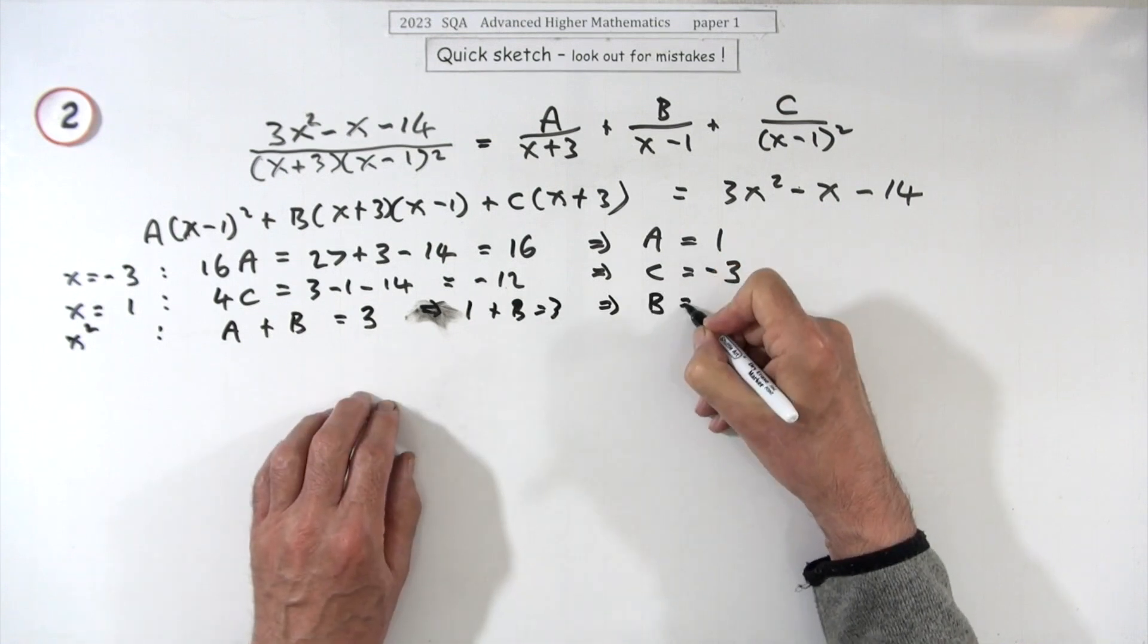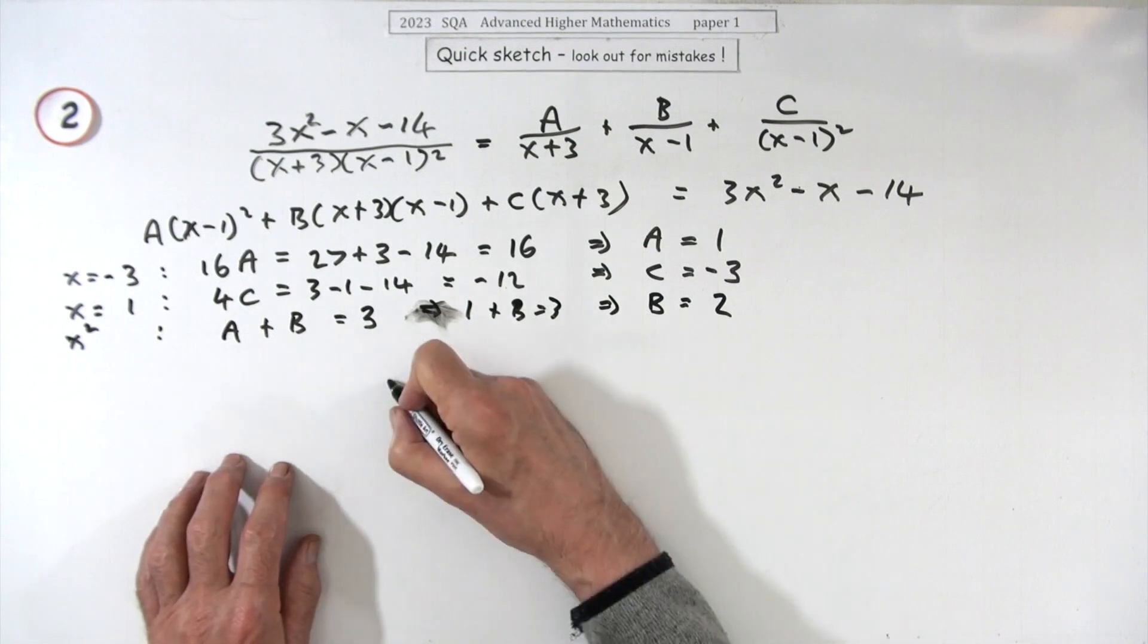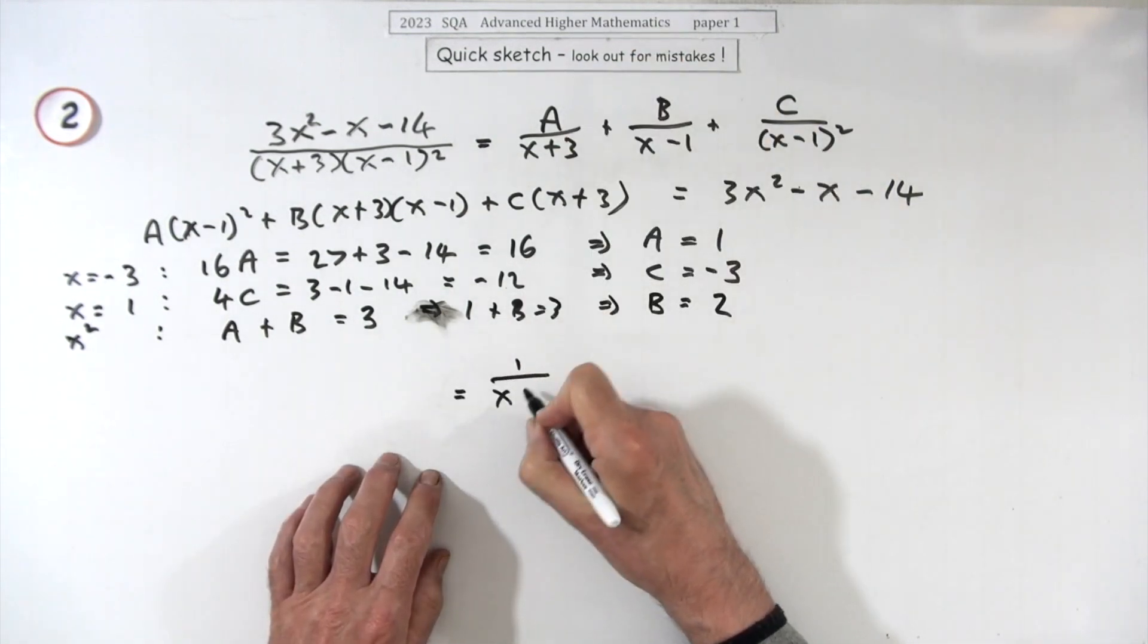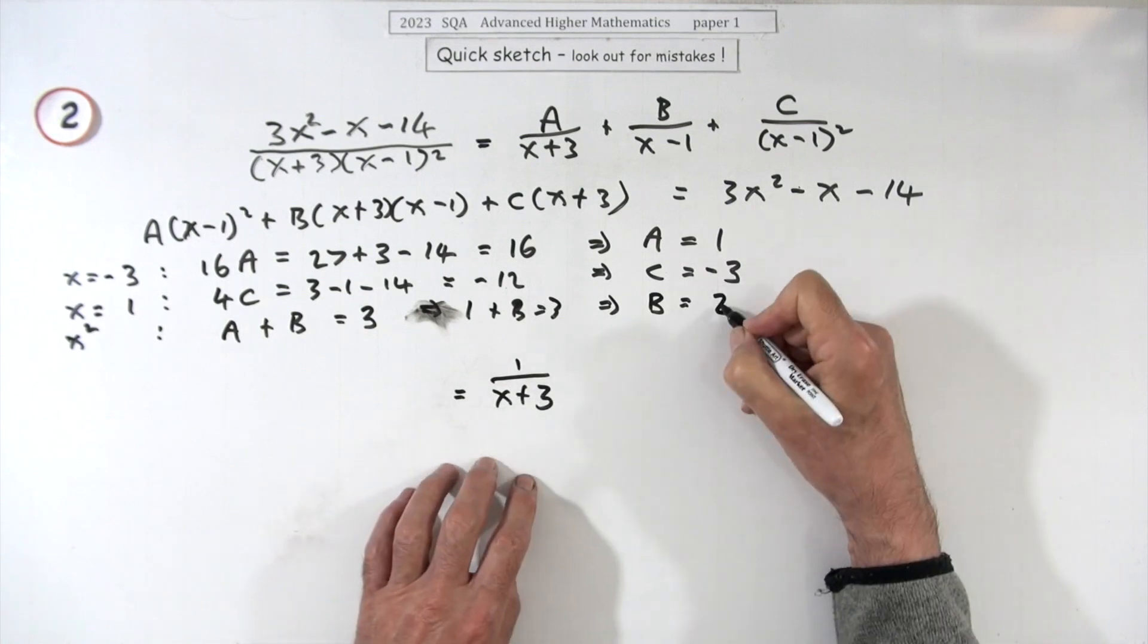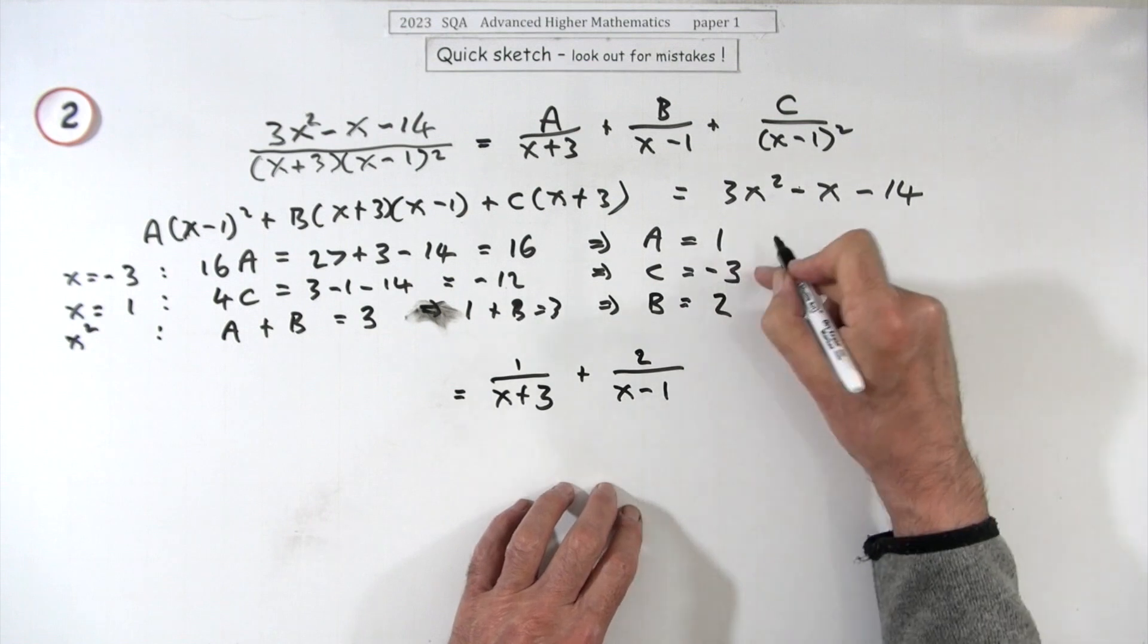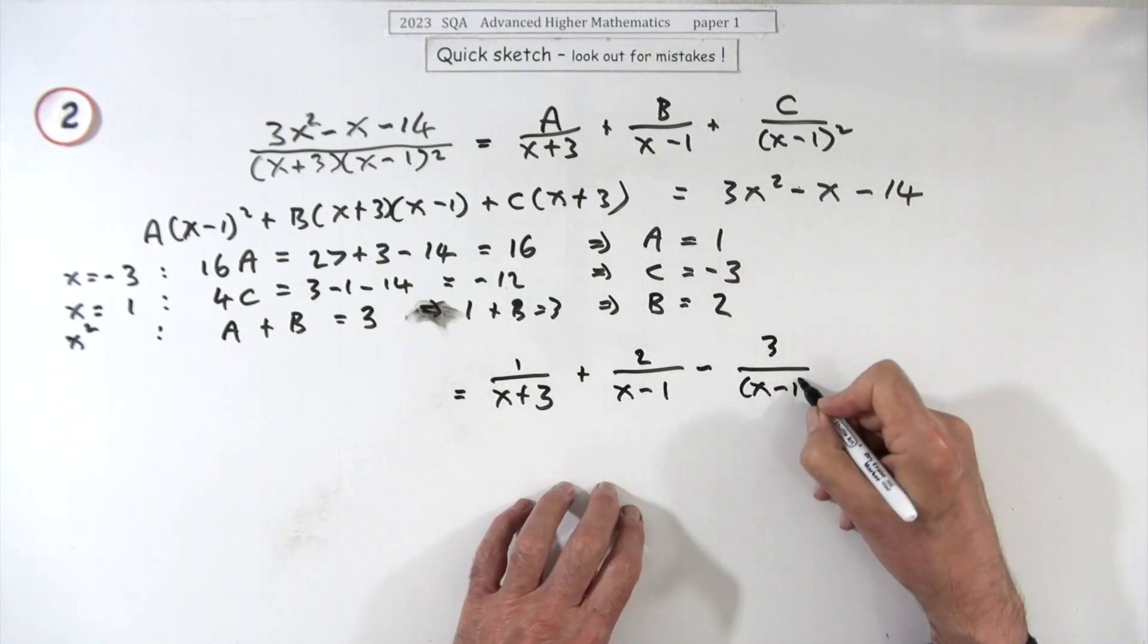Now just put it all together. So altogether it came to 1/(x+3) plus 2/(x-1), but minus, so I'll put that at the front: 3/(x-1)².